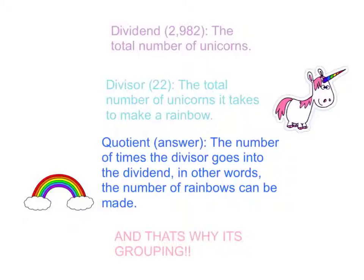The reason this is grouping is because in sharing, the dividend, the divisor, and the quotient are different from the ones in grouping.